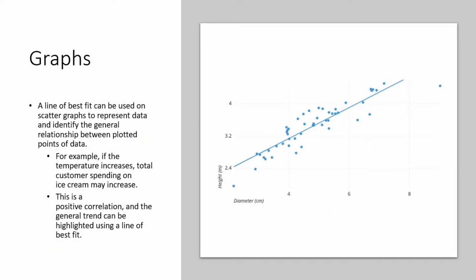A line of best fit can be used on scattergraphs to represent data and identify the general relationship between plotted points of data. For example, if the temperature increases, total customer spending on ice cream may increase. This is a positive correlation, and the general trend can be highlighted using a line of best fit.